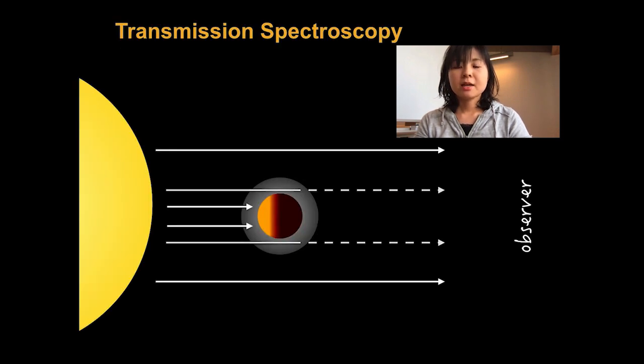During the transit, a small portion of the stellar light is filtered through the planetary atmosphere. By analyzing the spectrum of this tiny portion and finding the scattering or absorption features in there, we can learn about the atmospheric composition and the presence of condensate such as clouds. This technique is called transmission spectroscopy.